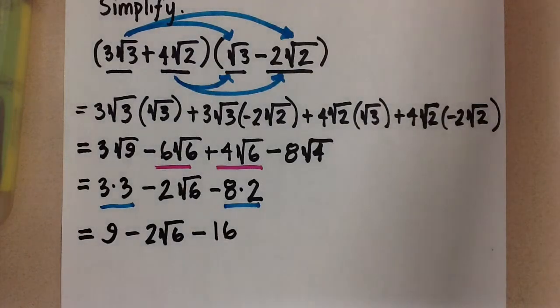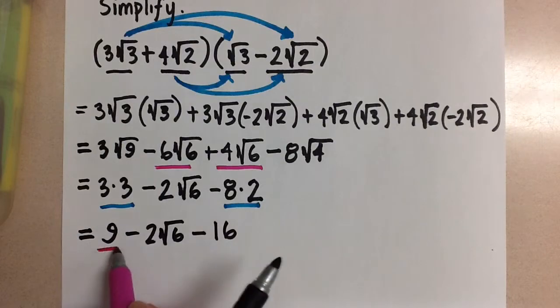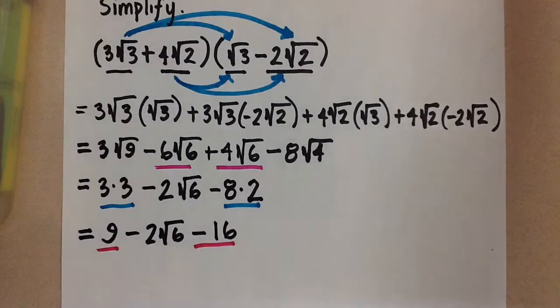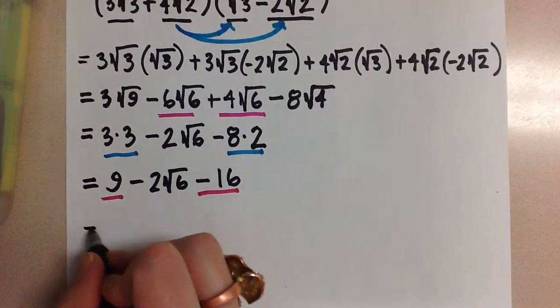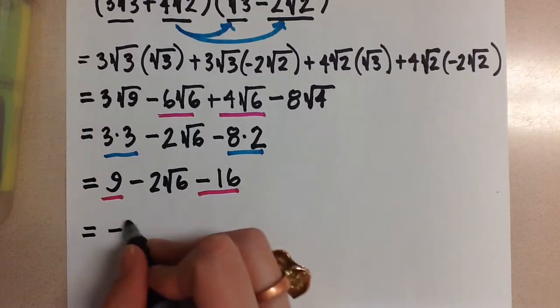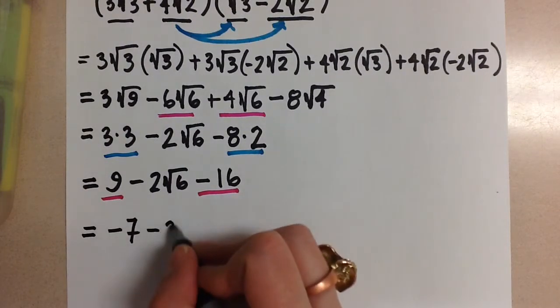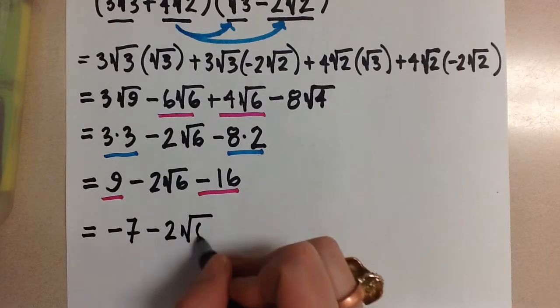And again I have like terms with this constant and this constant term. So I am going to combine those together. And I get negative 7 minus 2 root 6.